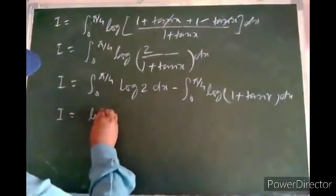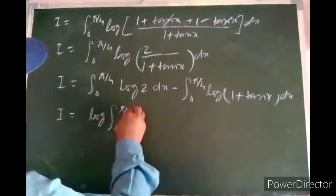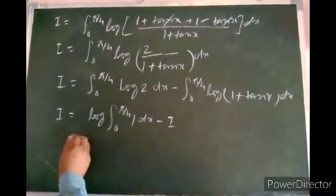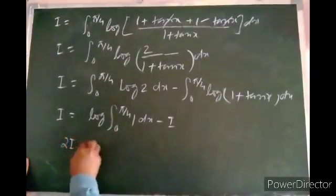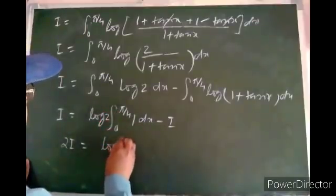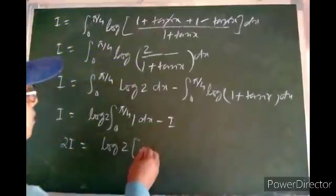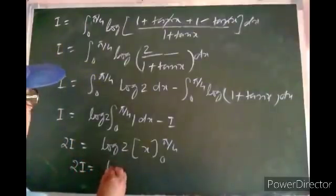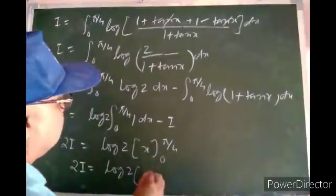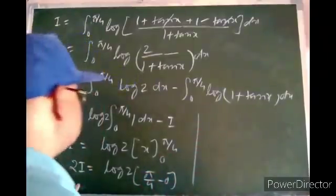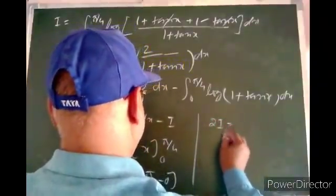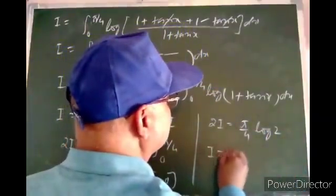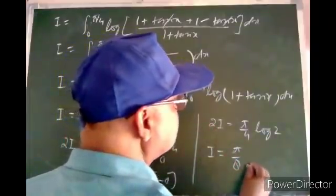Since log 2 is constant, it comes out of the integral: I = log 2 · ∫₀^(π/4) 1 dx − I. Bringing I to the left side gives 2I = log 2 · [x] from 0 to π/4. Therefore 2I = (π/4) · log 2, and I = π/8 · log 2. This is the required solution.